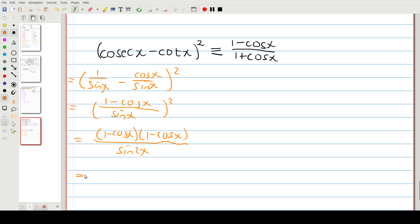Alright so we're getting there. We still have one minus cos x at the top which is what we want in the end, but there's another one minus cos x. So what can we do now?